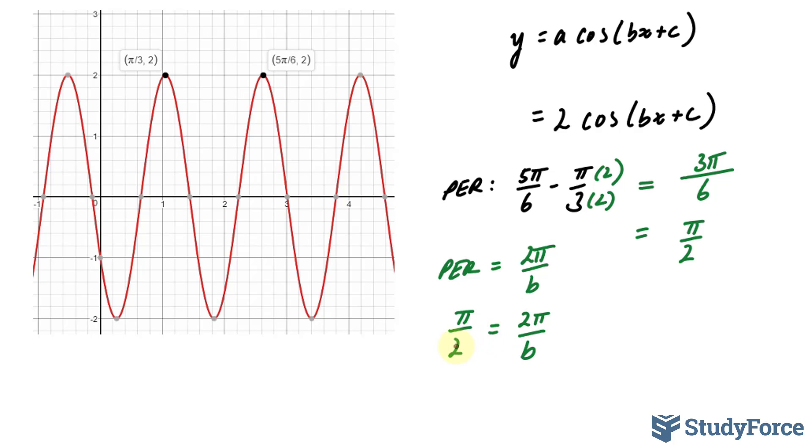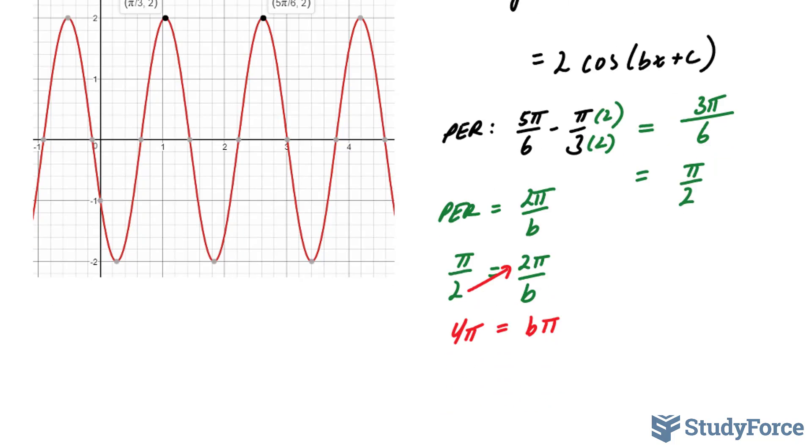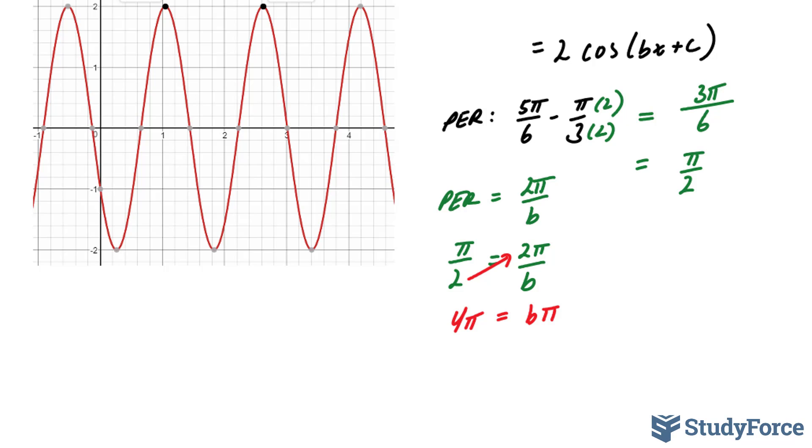You do cross multiplication. 2 times 2 pi is 4 pi. And b times pi is b pi. Isolating b, we divide both sides by pi. This gives us b is equal to 4. Now that we've found b is equal to 4, I'm going to place it right here, where I get y is equal to 2 cosine bracket 4x plus c.